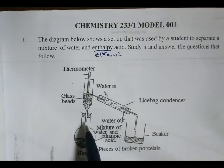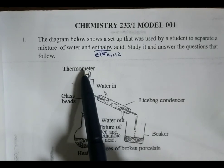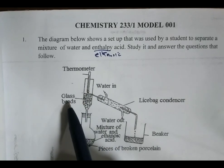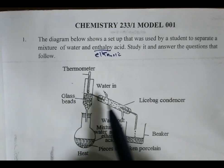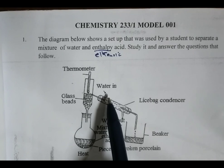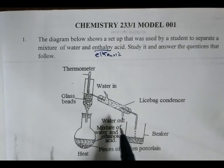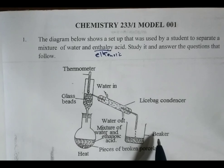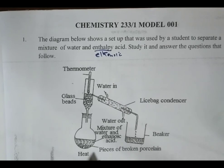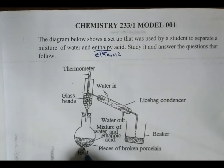We have the setup. We have the thermometer that is used to measure the temperature of the vapor passing through this point, the glass beads in the fractionating column, the Liebig condenser, the water inlet and water outlet, the beaker that is used to collect the liquid that boils first, and the pieces of broken porcelain. The mixture is being heated.